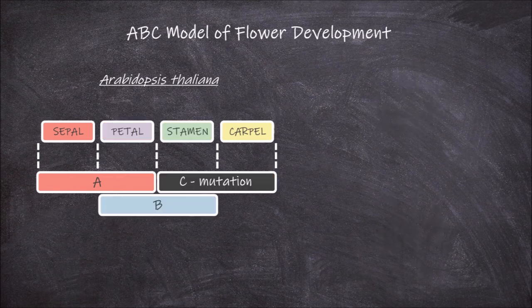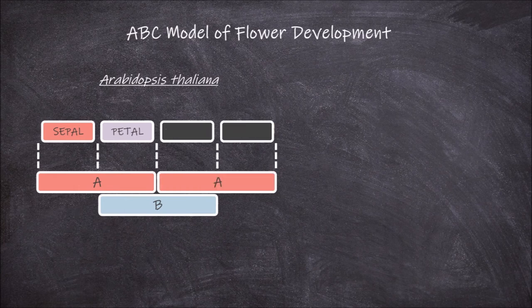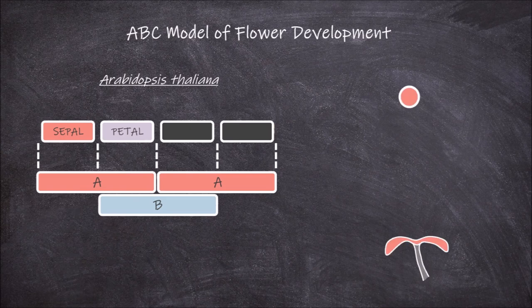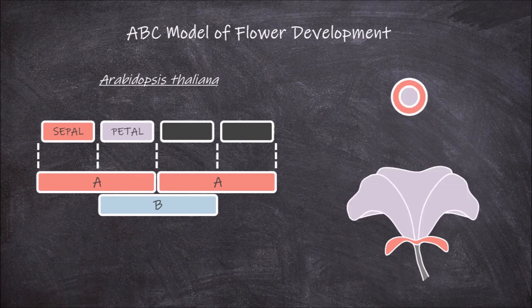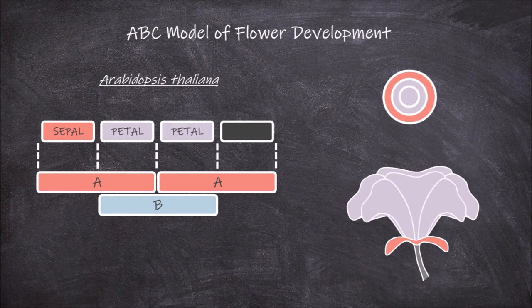In plants with mutations in the C genes, no reproductive organs develop — so no stamens or carpals develop, as they require the expression of C genes to develop. A genes are expressed instead of the C genes. Whorl 1 is unaffected and still develops as sepals. The second whorl is also unaffected and still develops as petals. But because A genes are expressed instead of the C genes, the third whorl develops as a second whorl of petals instead of the stamens. Whorl 4 is also affected and instead of developing into the carpals, it develops into a second whorl of sepals.